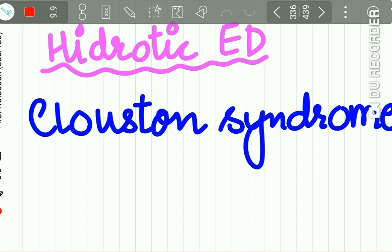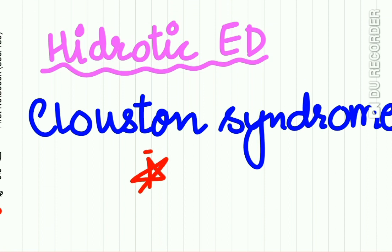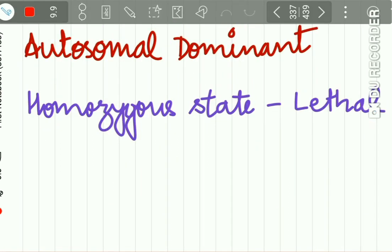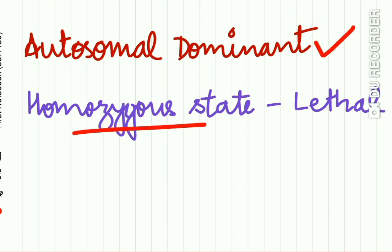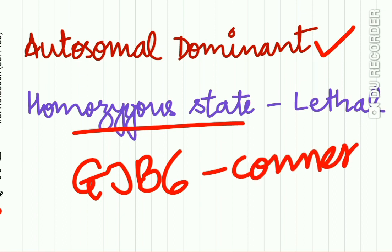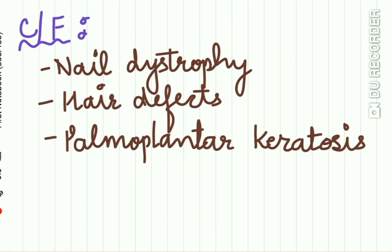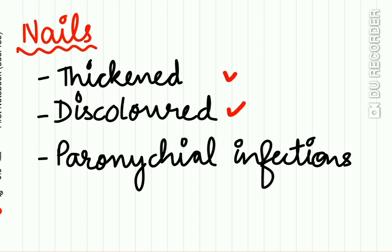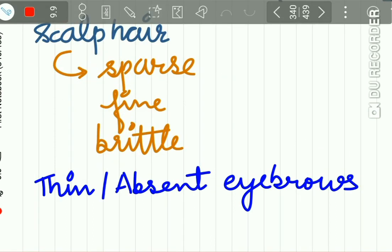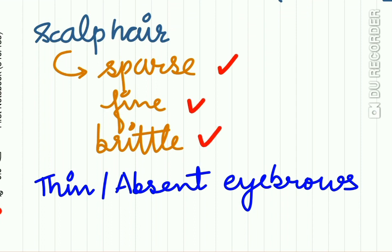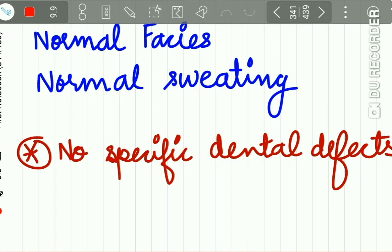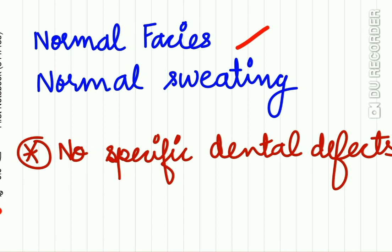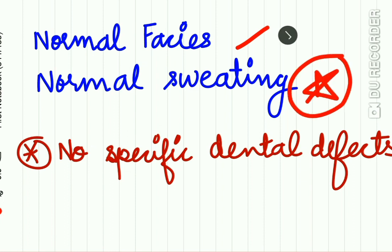The second syndrome is hydrotic ectodermal dysplasia, known as Clouston syndrome. It is inherited as autosomal dominant; the homozygous state is lethal. The gene affected is GJB6, which encodes the protein connexin 30. Clinical features include nail dystrophy, hair defects, and palmoplantar keratosis. The nails may be thickened, discoloured, and prone to paronychia! infections. Scalp hair is sparse, fine, and brittle, and eyebrows may be thin or absent. Notably, facial features are normal and sweating is normal in the hydrotic type.